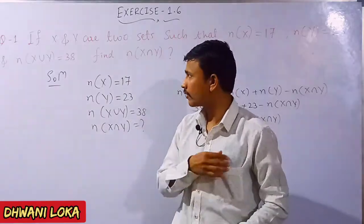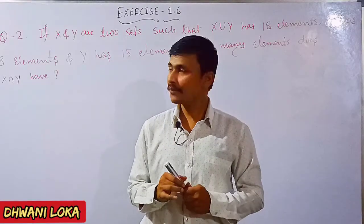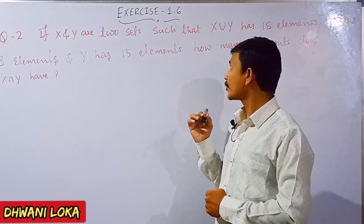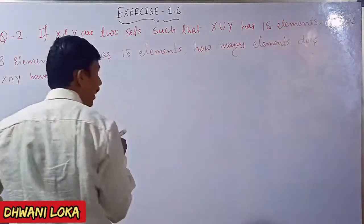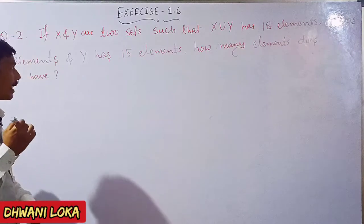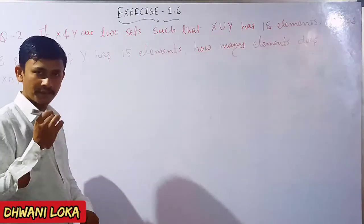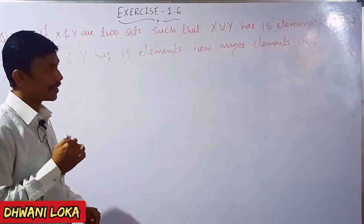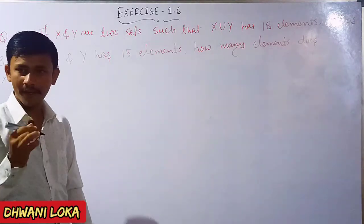Question number 2: If X and Y are two sets such that X union Y has 18 elements, X has 8 elements, and Y has 15 elements, then how many elements does X intersection Y have?